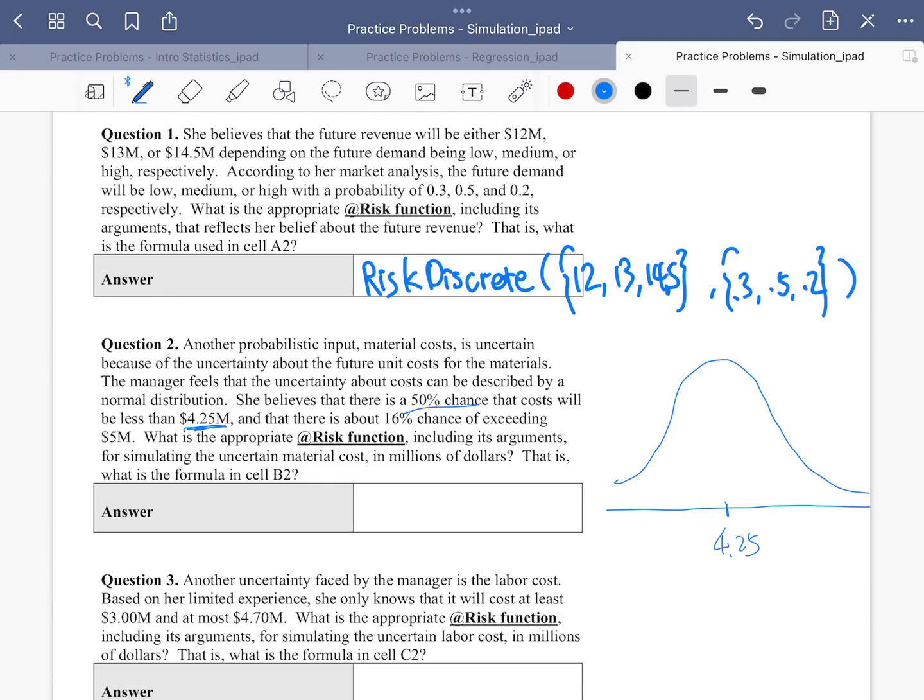In order to simulate something that follows a normal distribution, there's a risk function just for doing that. And the function is risk normal. Well, risk normal requires two arguments. The first argument is the mean. Well, that's what we have here. We know the center of this bell curve is 4.25. So we can put it here.